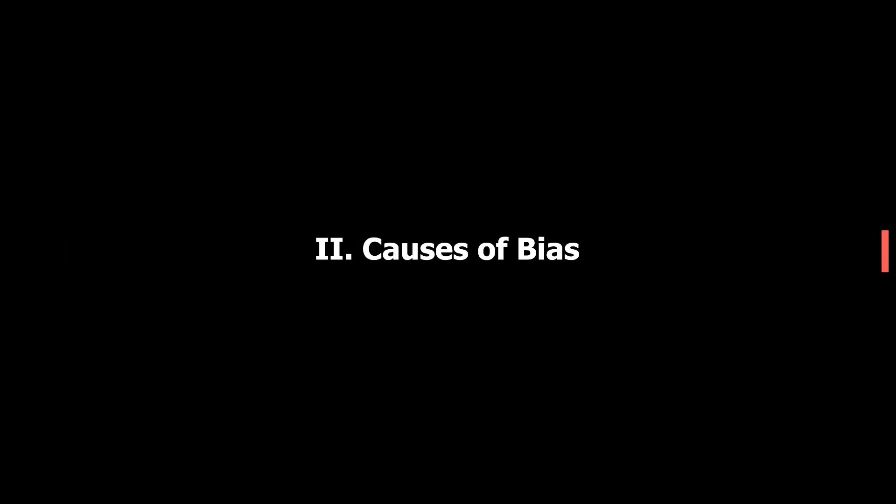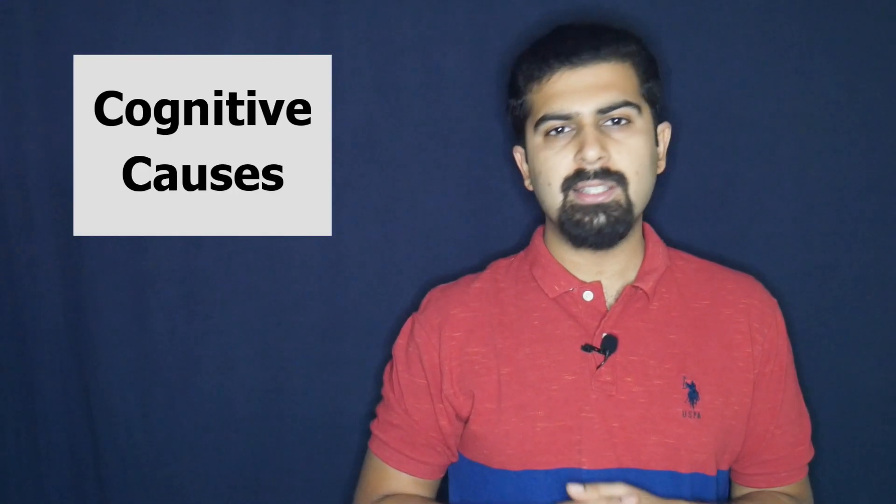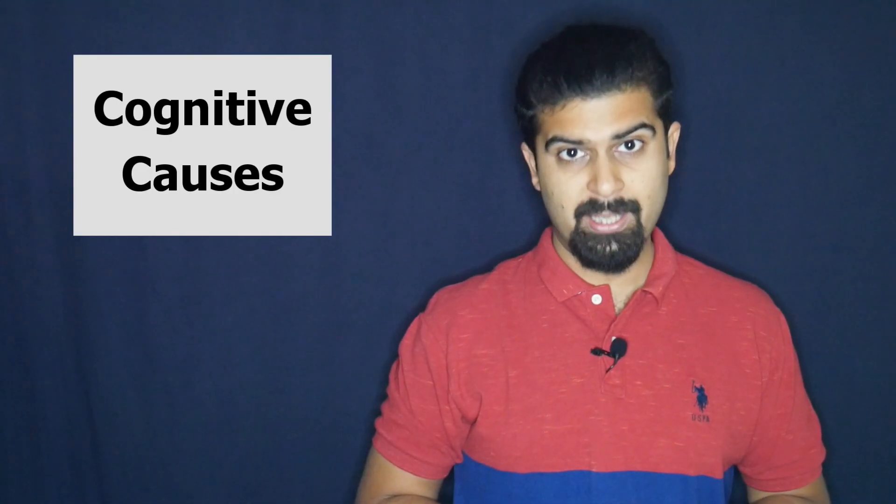Hyperbolic discounting explains preference reversal by proposing that impatience decreases as the delay to the sooner payoff increases. In the next section, we look at the causes of the present bias.